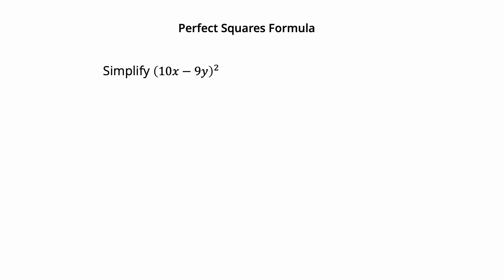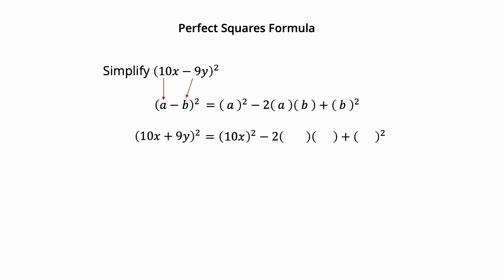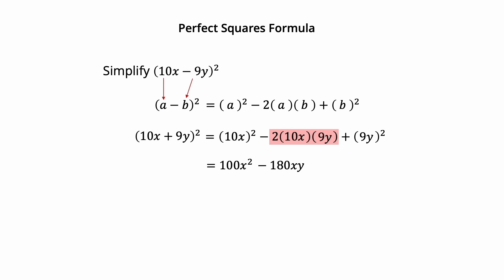Simplify the square of 10x minus 9y using the perfect square formula. 10x is a and 9y is b. The square of 10x is 100x squared. Minus 2 times 10x times 9y equals minus 180xy. The square of 9y is 81y squared. So the result is 100x squared minus 180xy plus 81y squared.